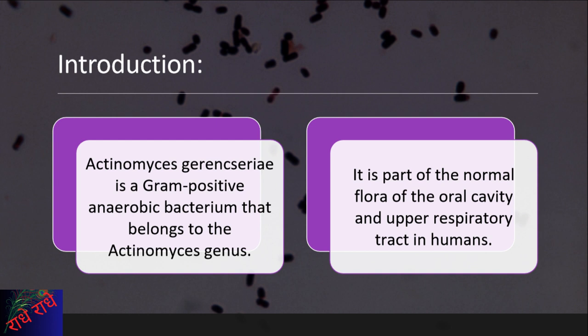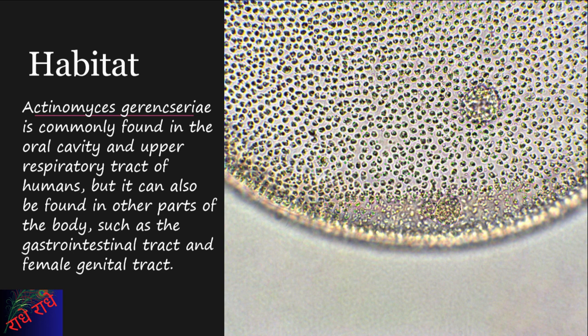Actinomyces garangerii is an anaerobic gram-positive bacterium belonging to the genus Actinomyces. Commonly found in the oral cavity and upper respiratory tract of humans, it is a part of the normal flora of the human body. It can also colonize other parts of the body, such as the gastrointestinal and female genital tracts. This species is known for its adaptability and ability to survive in various environments, making it a resilient part of the human microbiome.